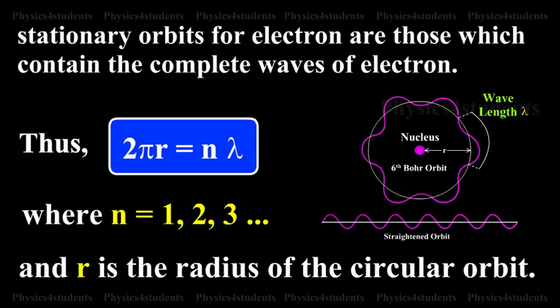Thus, 2πr = nλ. This is equation 2, where n = 1, 2, 3 and so on, and r is the radius of the circular orbit.